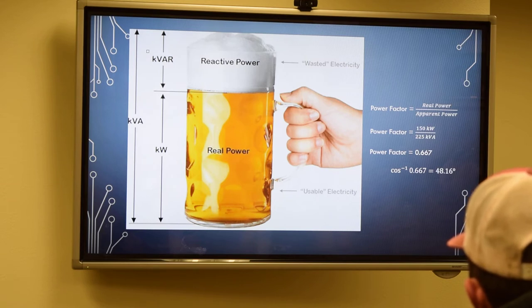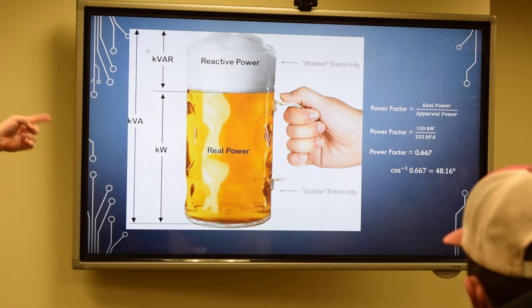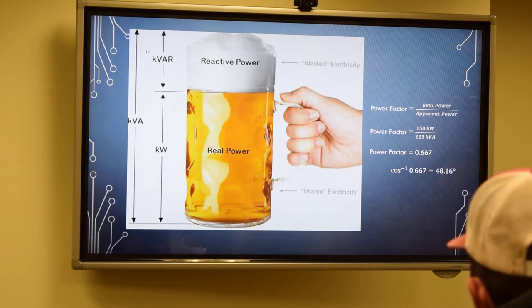So an example right here, the 150 kW divided by, say, a 225 kVA transformer. Your power factor is 0.66, and we'll denote that as 0.66 lagging. When we take the cosine inverse of that power factor, that 48 degrees, we use that more in the relay side of it. That's how we calculate the phase angle between your voltage and your current. And so that angle is important to us when we start programming relays.